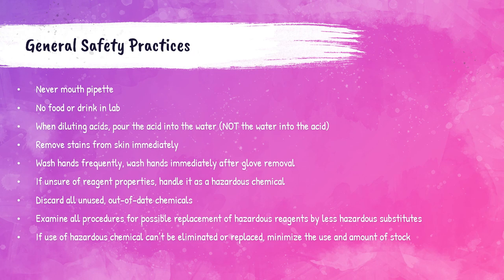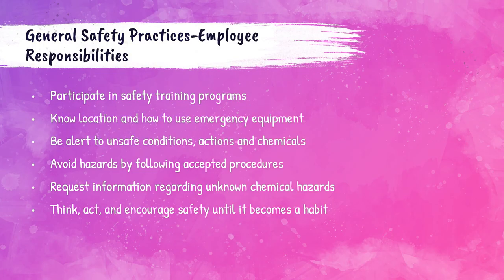Procedures should be reviewed regularly to determine if hazardous reagents can be replaced by less hazardous substitutes. If hazardous chemicals cannot be replaced, their use and the amount of stock kept in the laboratory should be minimized. Employee responsibilities for staying safe include participating in safety training programs, knowing the location of emergency equipment and how to use it, being constantly on alert for unsafe conditions, following laboratory procedures to avoid hazards, and requesting information regarding any unknown chemical hazards.